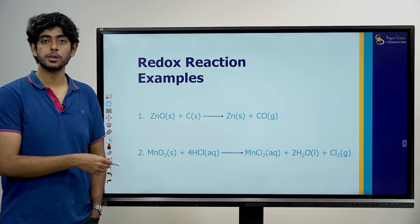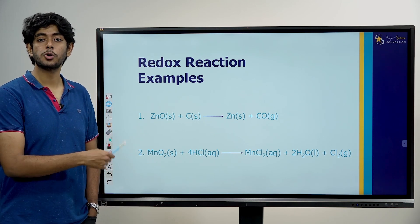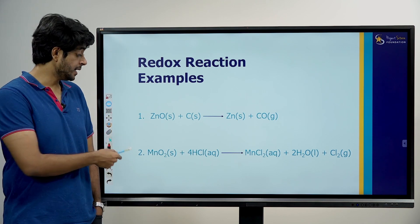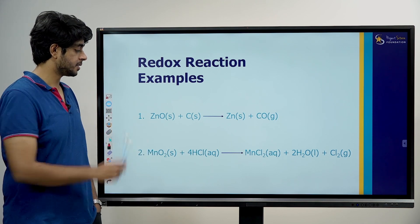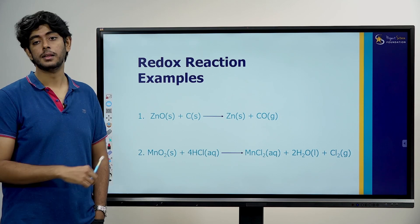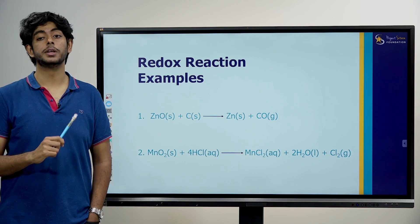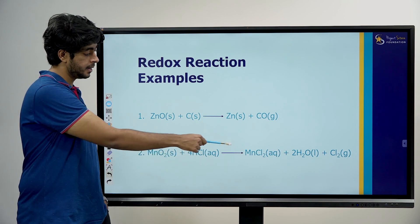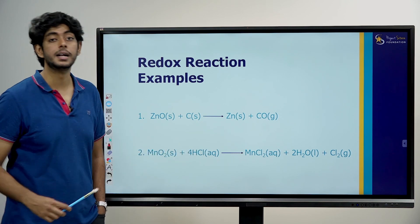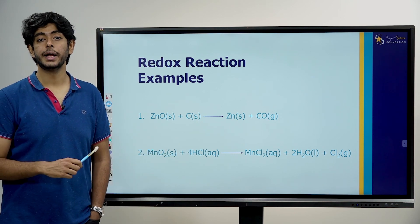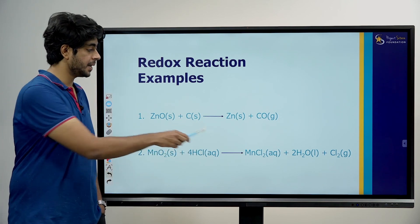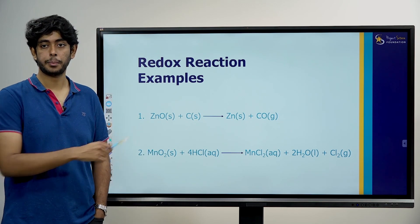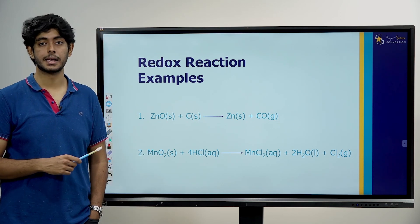Second example: MnO2 — manganese oxide — plus 4 HCl hydrochloric acid reacted together to give MnCl2 manganese chloride, plus 2 H2O water, plus Cl2 chlorine gas.